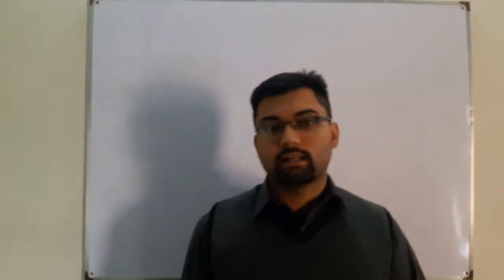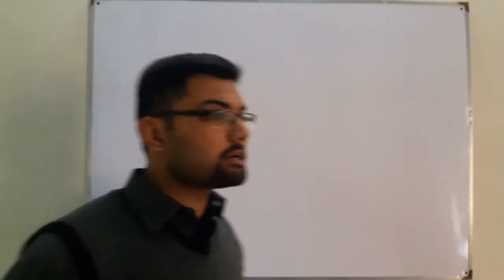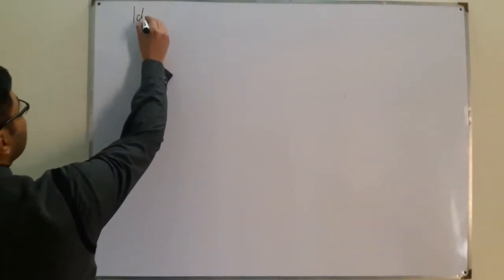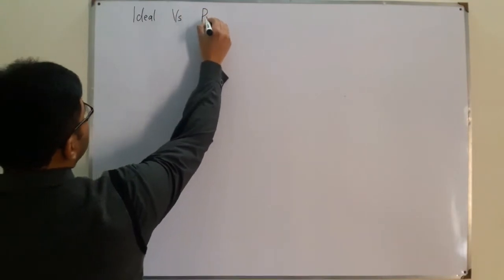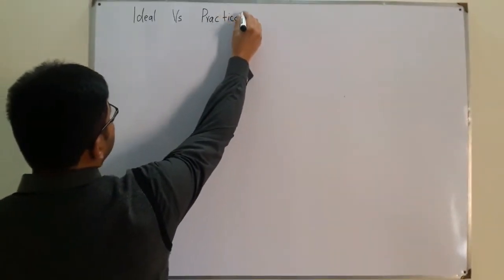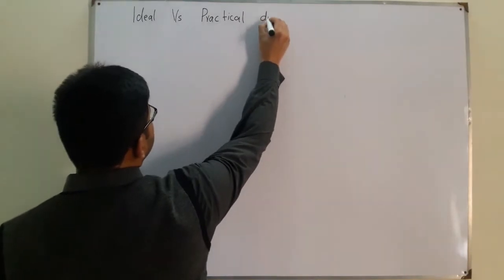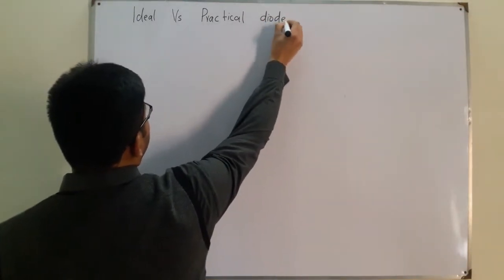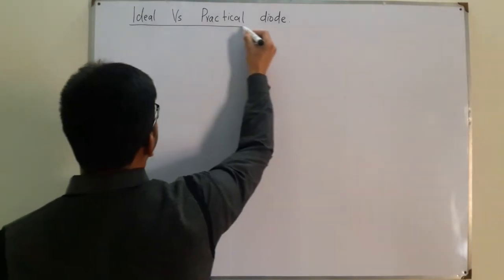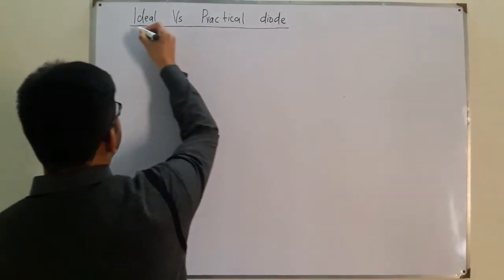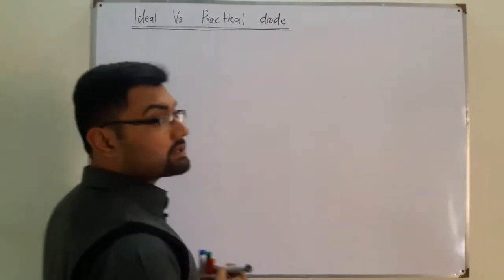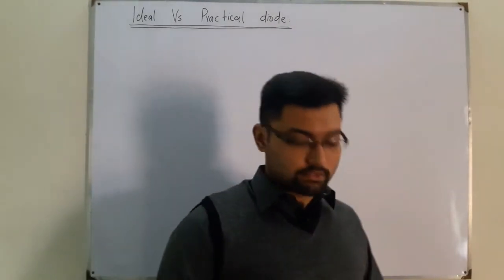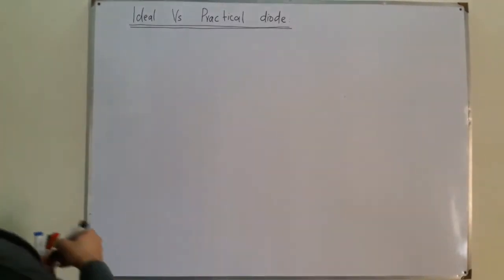Bismillahirrahmanirrahim. Assalamu alaikum. Salah Khan here, and today the topic is ideal versus practical diode. An ideal diode is what we consider for theoretical purposes and calculations, while a practical diode is the commercially available diode unit.